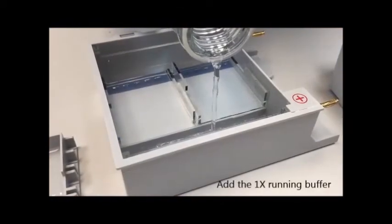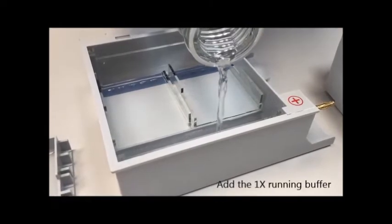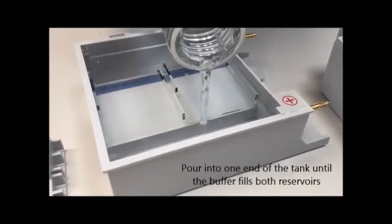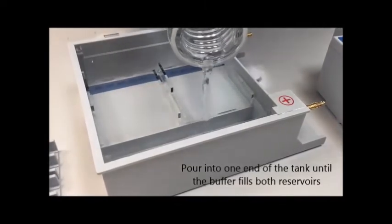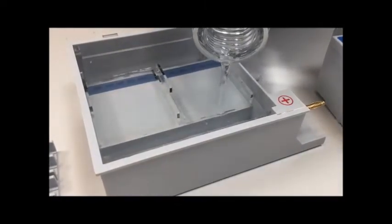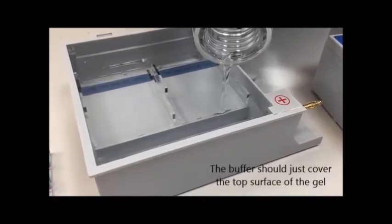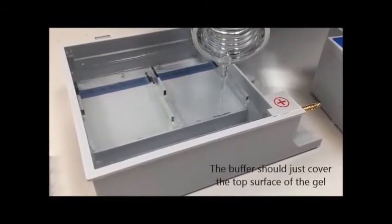Next, add the 1x buffer to the running tank. Slowly pour the buffer into one end of the tank until the buffer fills both reservoirs. There is enough buffer in the tank when both reservoirs are filled and there is a small amount of buffer covering the gel.